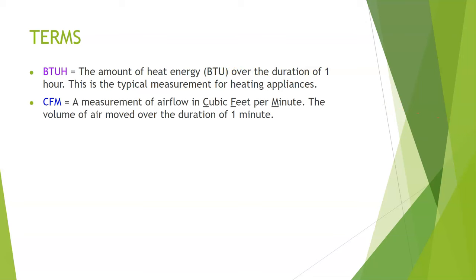The second term is CFM, which is a measurement of airflow in cubic feet per minute. It's the volume of air moved over the duration of one minute. Imagine a one-cubic-foot box full of air — how many of those boxes can I move in 60 seconds? It's just a volume of air movement. A CFM is easy to visualize: a typical residential bathroom fan moves anywhere between 50 to 75 CFM in most cases.